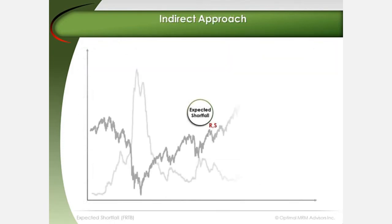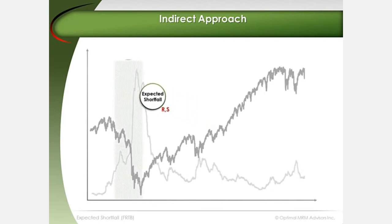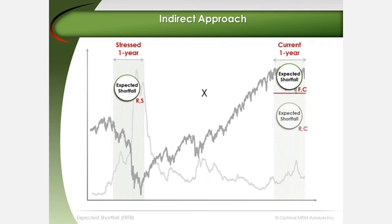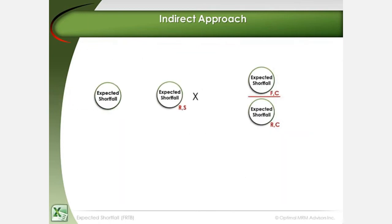In the indirect approach, expected shortfall is calculated with a reduced set of risk factors calibrated to the most severe one-year period of stress available. It is then multiplied by the ratio of expected shortfall calculated with a full set of risk factors over the most current one-year to expected shortfall calculated with a reduced set over the same period. The minimum value that the adjustment ratio can have is 1.